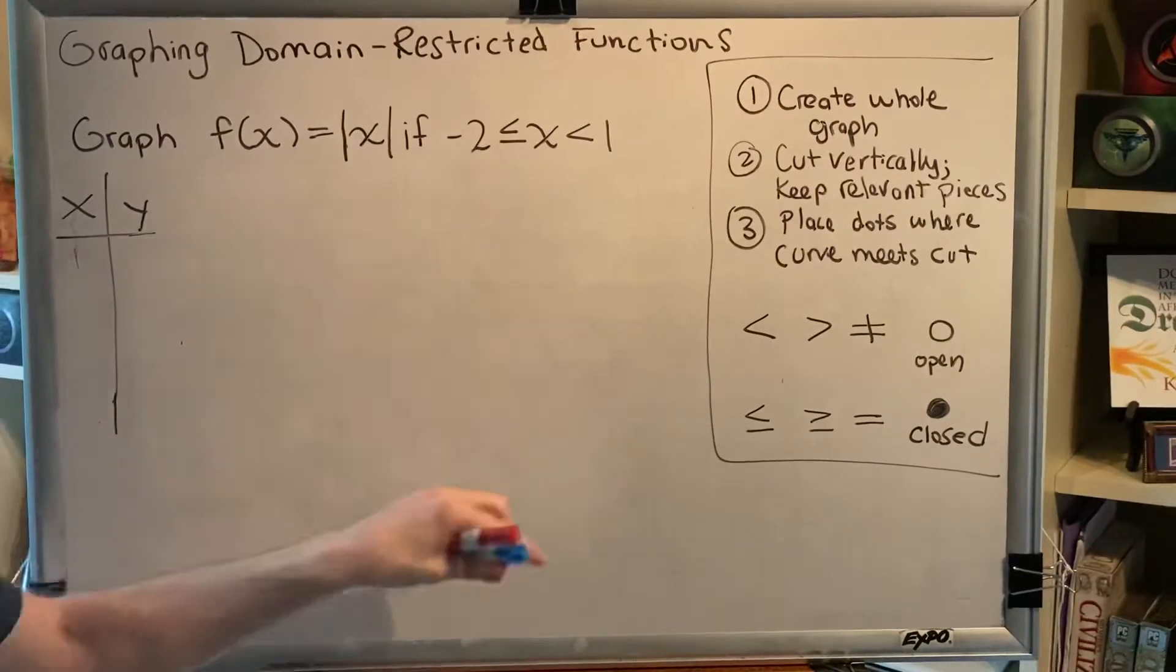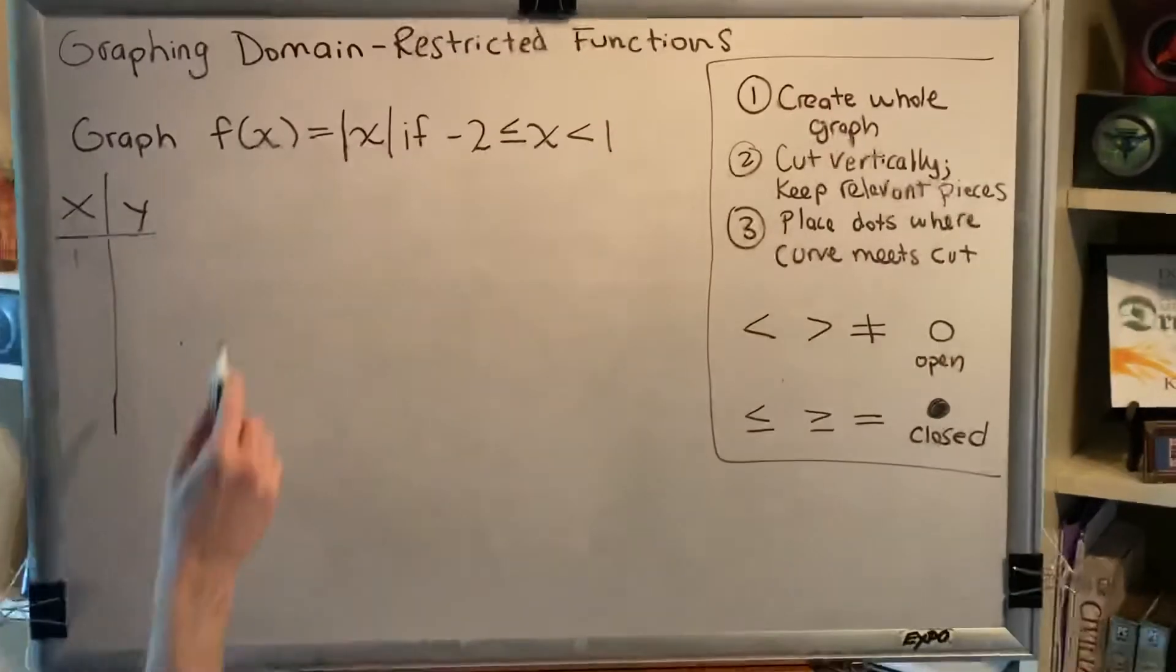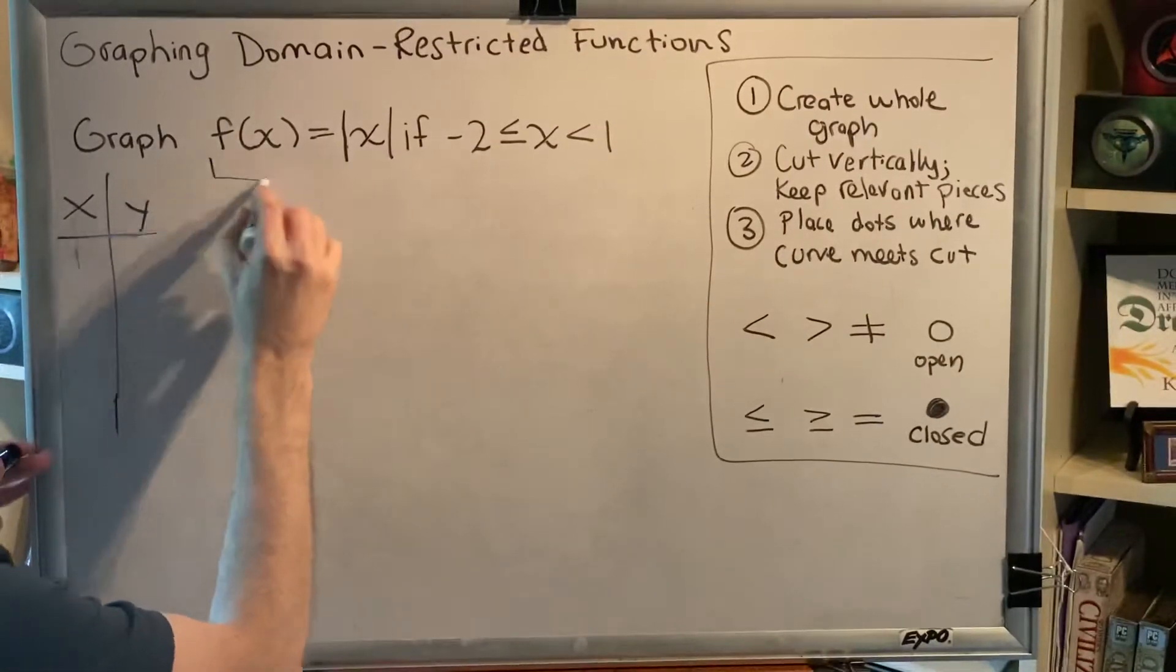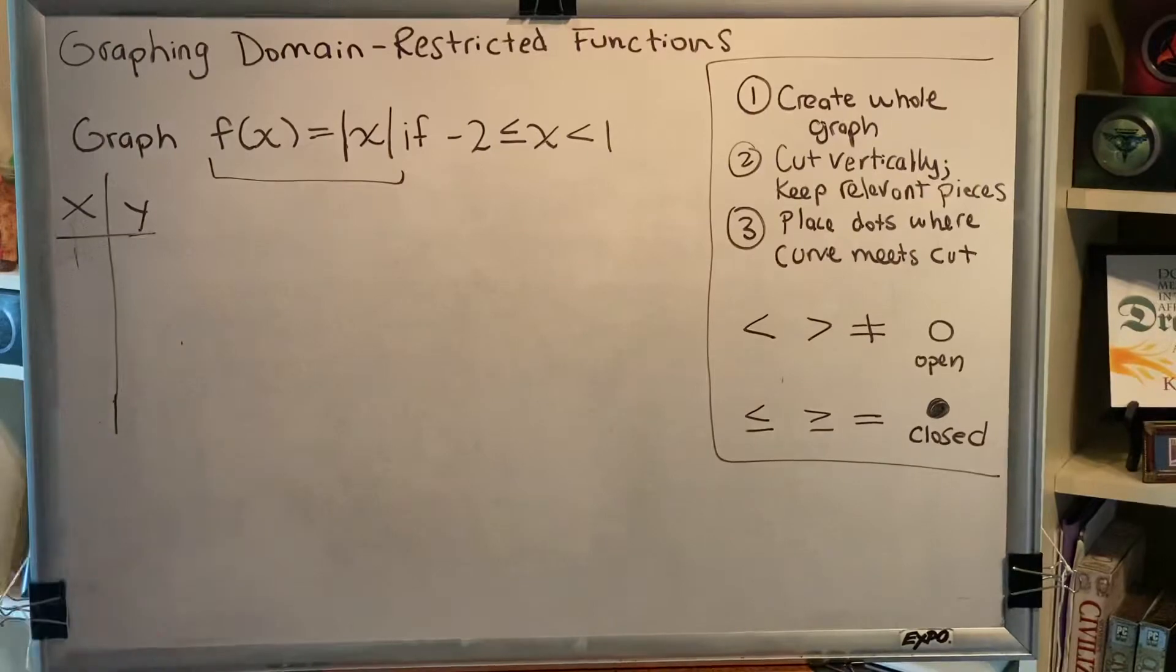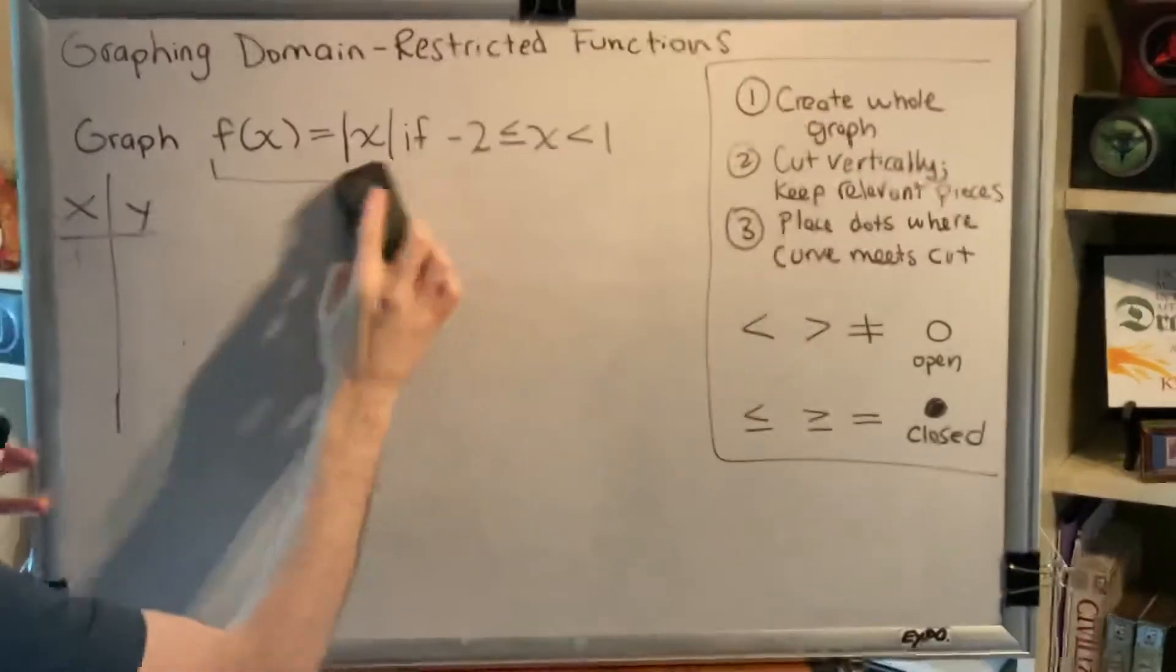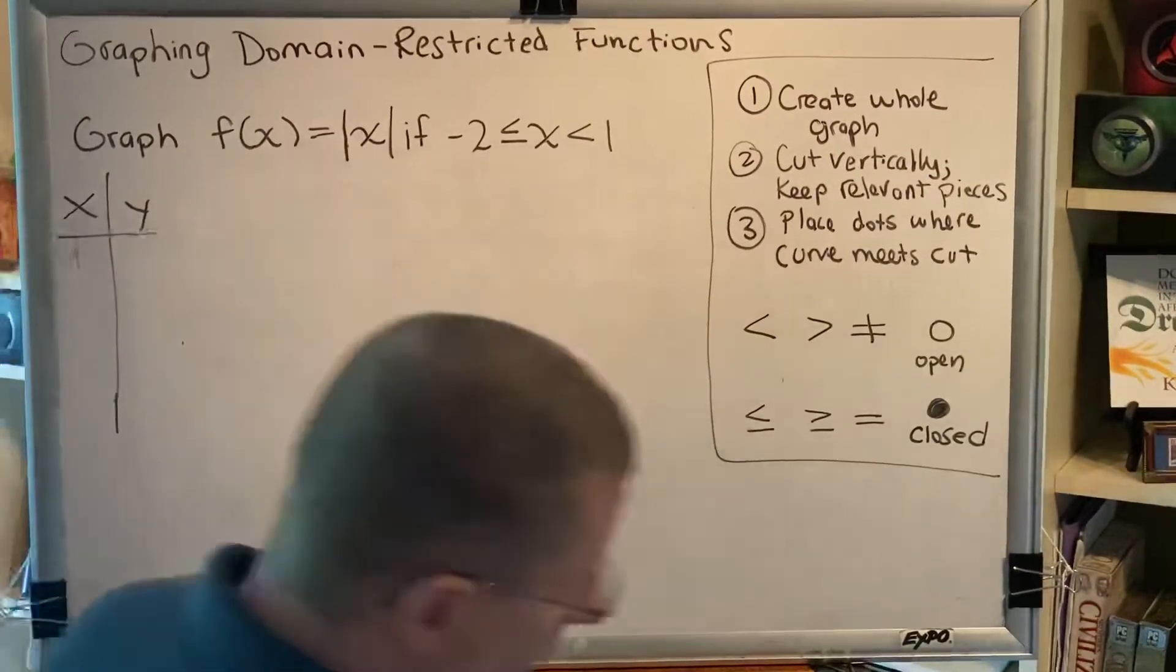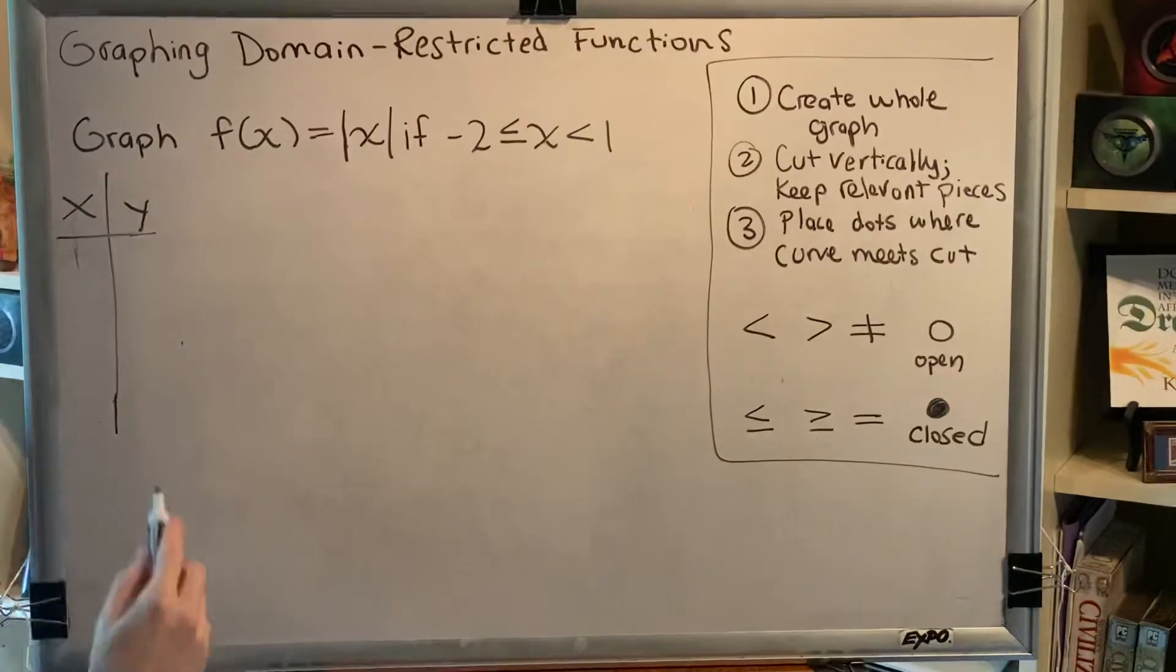Graph f of x equals the absolute value of x if negative 2 is less than or equal to x is less than 1. Let's go through the steps. Step 1 says to create the whole graph, so we have to create the graph of f of x equals the absolute value of x. This is one of our library of functions, and so you should be able to do this quickly.